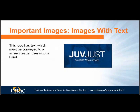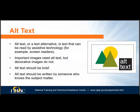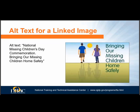Blind people cannot see images, so if an image has text, it should be conveyed to a blind person using a screen reader. Alt text is text that can be read by assistive technology and is usually invisible to the sighted. While adding alt text is easy, writing it can be very difficult — unless the image is very simple, the alt text should be written by a subject matter expert. A linked image needs brief alt text explaining where the image will take you if you click on it. If there is other text on the image, include that as well if it seems important. In this image that links to the National Missing Children Day Commemoration website, that must be included in the alt text.